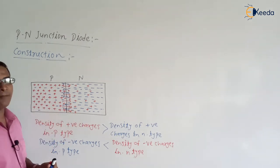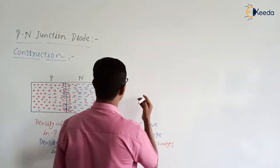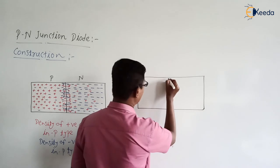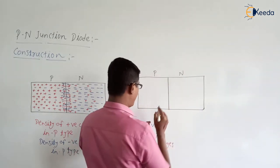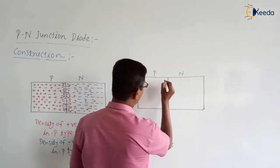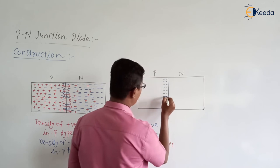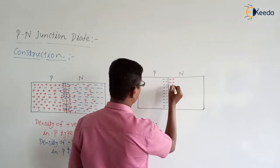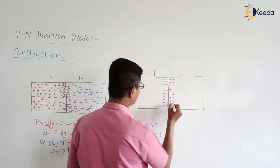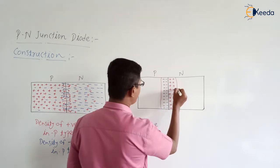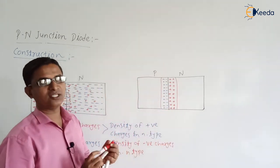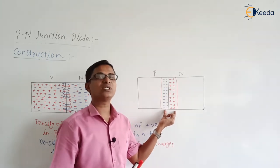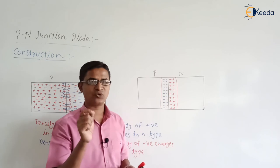After connection of the P-type and N-type material, we will have one type of layer near to the junction. Once P-type and N-type materials are connected together, at the P-side we have a layer of negative charges formed near to the junction, and at the N-type we will have a layer of positive charges formed near to the junction. This layer near to the junction is known as the depletion layer.